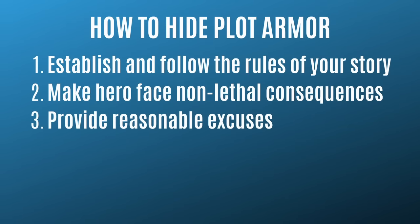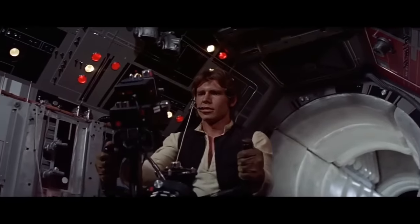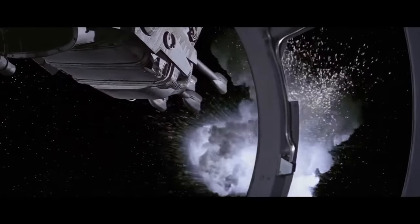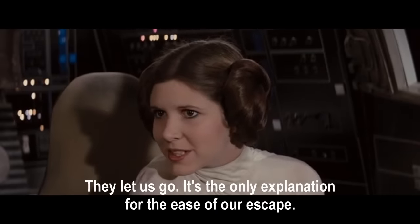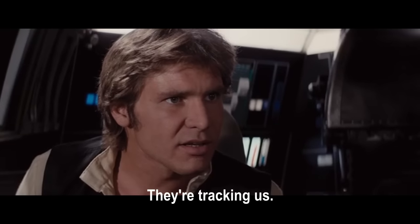Tip number three: provide reasonable excuses for why the heroes can't be killed. This might hold true for one particular scene or over the course of your entire story. An example comes from the original Star Wars movie. After Luke, Han, and Leia escape the Death Star, they're chased by TIE fighters and survive despite the fact that the Empire should be able to outright destroy them. However, Leia points out why they escaped so easily: 'They let us go. It's the only explanation for the ease of our escape.' 'They're tracking us.'